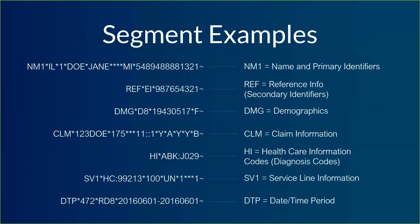Now let's take a look at some segments. It's actually quite easy in many cases to figure out the meaning of a segment just by looking at it. If we take the first one, the NM1 segment — that one is meant for information including name and primary identifiers. NM is name, and 1 is for primary identifiers. In this particular case, I have a subscriber segment, so it's going to have subscriber name and subscriber ID. But NM1 segments will also cover providers, in which case you'll get the provider name and their NPI as their primary identifier. If it's a payer, you'll get the payer name and the payer ID.